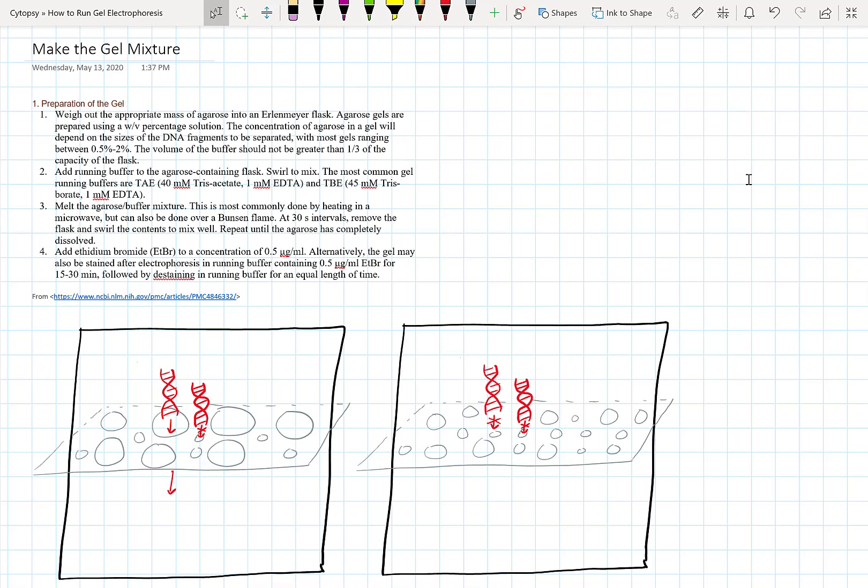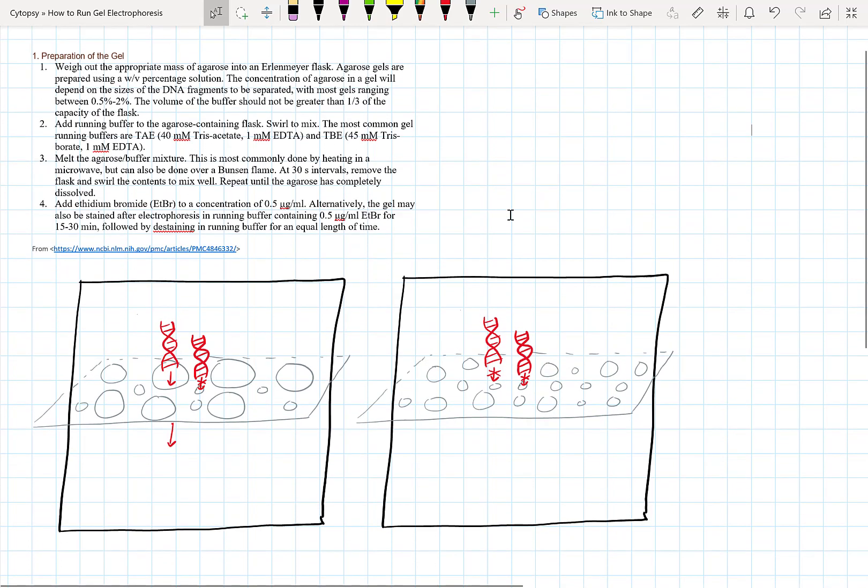So the first step that we've got in this protocol, don't worry, it's inside the link description at the bottom. The first step is to weigh out the appropriate mass of agarose into a flask. And depending on how much agarose you add into the flask, you'll get more or less porosity within the gel. We talked about porosity in our previous video, but let's just revisit it here. At the bottom, I've got this visualization of what porosity actually means.